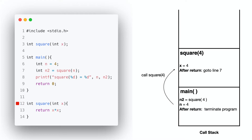A square(4) frame is made. The frame data is created. x equals to 4 is set. This function is written. Right now the return line is reached — return to line 7. After return, go to line 7. The next line is x times x, 4 times 4, which is 16 — return. Now the square(4) function returns 16.